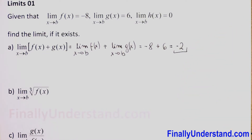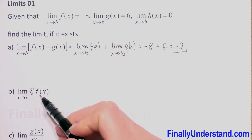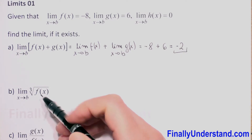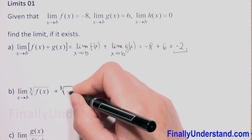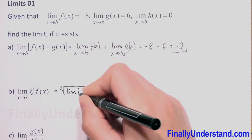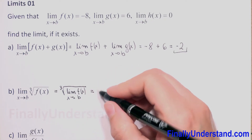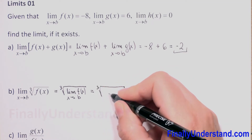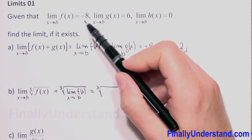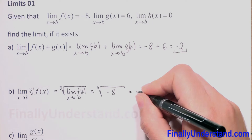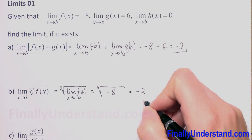Next we have to find the limit as x approaches b of the third root of f(x). From properties of limits, we can rewrite this as the third root of the limit of f(x) as x approaches b. We put in negative 8, so this equals negative 2, because the third root of negative 8 is negative 2. This is our solution.